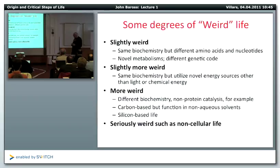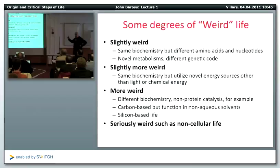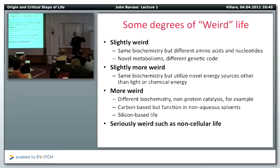Slightly weird: the same biochemistry but maybe different amino acids and nucleotides. One of my colleagues, Steve Benner, has actually substituted different nucleotides into DNA as a way to help cure various diseases while still maintaining an active DNA. Or novel metabolisms — when we started the Weird Life Report there were three ways to fix carbon dioxide, three metabolic pathways. We now have seven, having identified four new ones in the past seven or eight years.